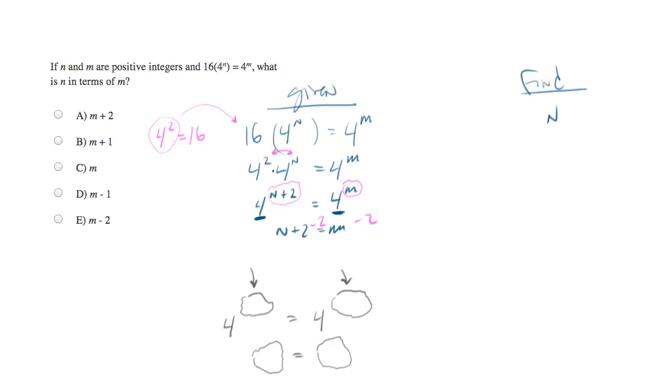Subtract 2 from both sides. And what you'll end up with is n equals m minus 2, which is answer choice E.